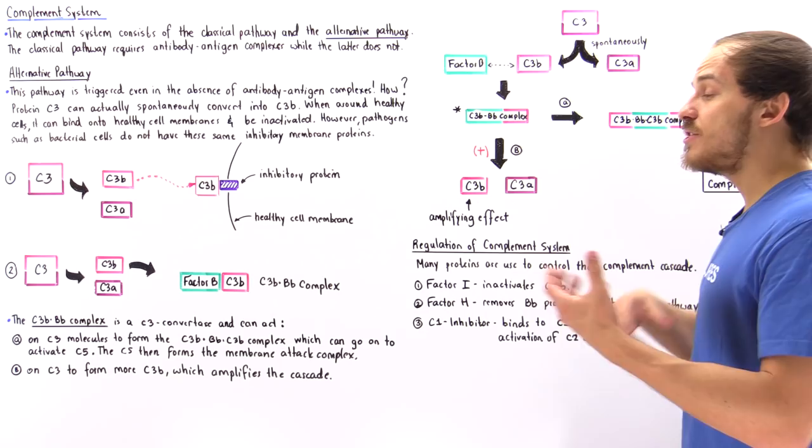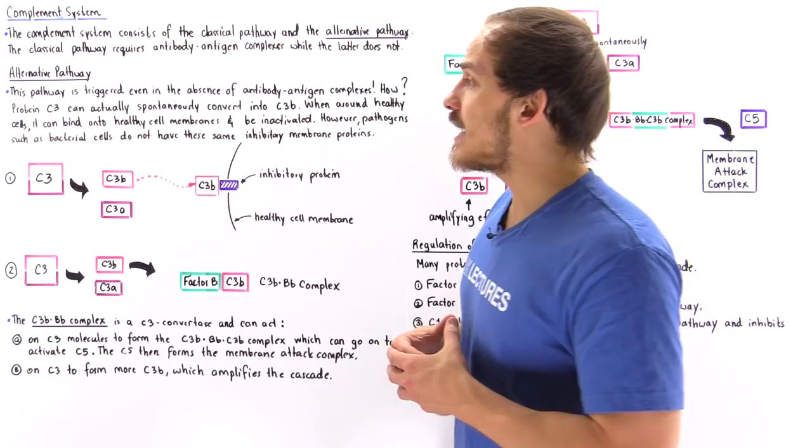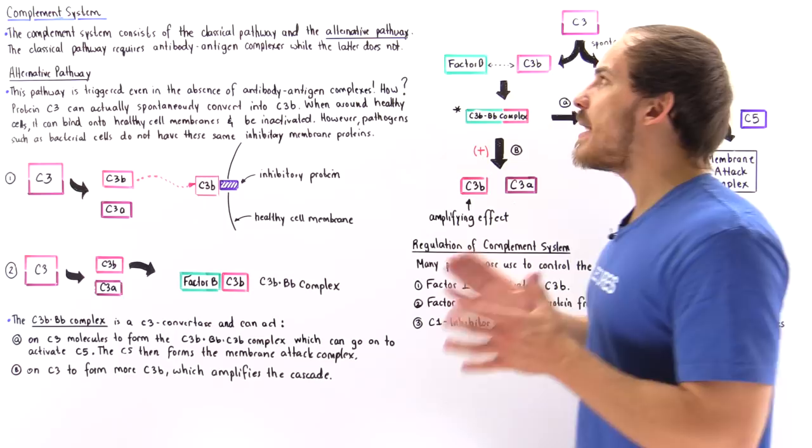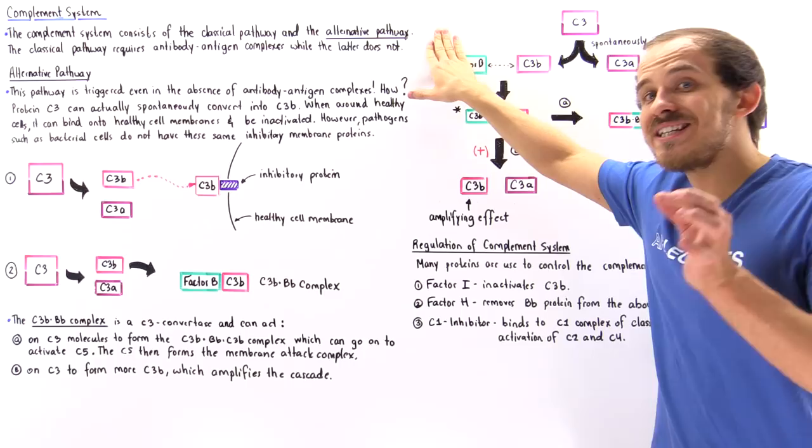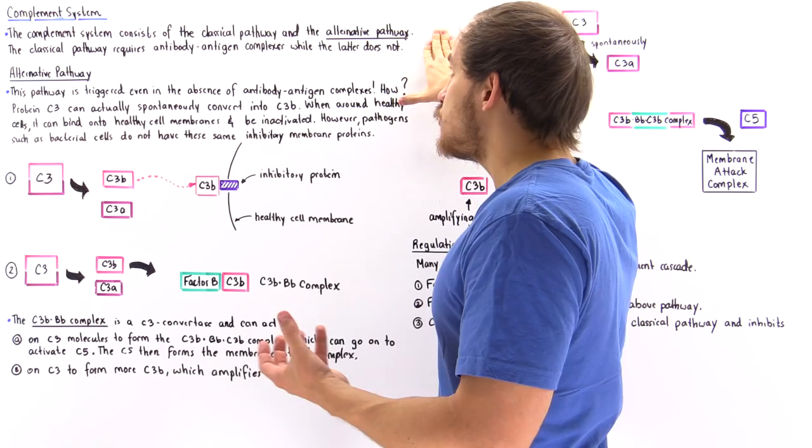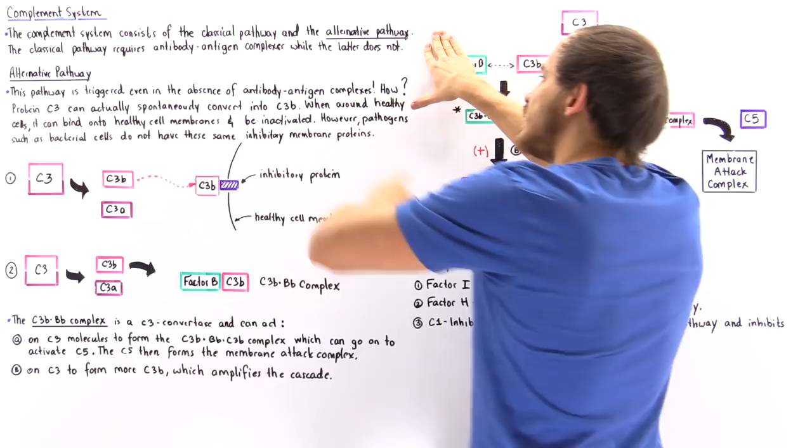That basically initiates many different types of mechanisms that eventually protect our body from different types of pathogenic agents and antigens. Now, what about the alternative pathway? Unlike the classical pathway, which needs the presence of the antibody-antigen complex to initiate, the alternative pathway can be triggered even in the absence of the antibody-antigen complex. The question is how?